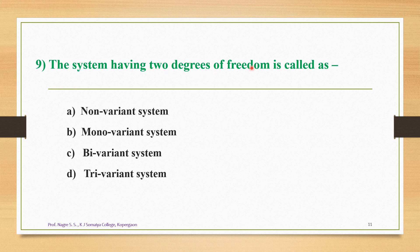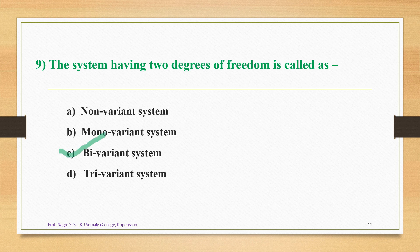Question number nine: the system having two degrees of freedom is called as — option A is non-variant system, option B is mono-variant system, option C is bi-variant system, option D is tri-variant system. Non-variant means F=0, mono-variant means F=1, bi-variant means F=2, and tri-variant means F=3. Since the question asks for two degrees of freedom, the correct answer is option C — the bi-variant system.